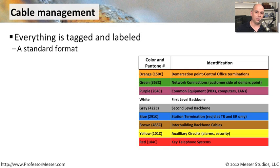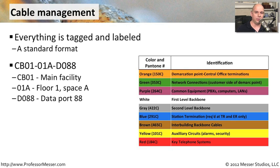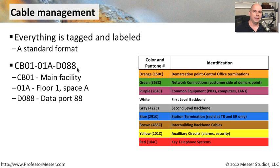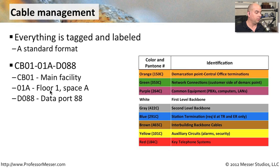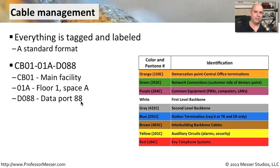The EIA-TIA standard we mentioned talks about ways to do this. Here's how you might tag one cable — that end of the cable is CB01-01A-D088. This may mean that CB01 is your main facility building, 01A means it's on floor number one in your A data room, and D088 means data port 88. That's a very specific labeling.